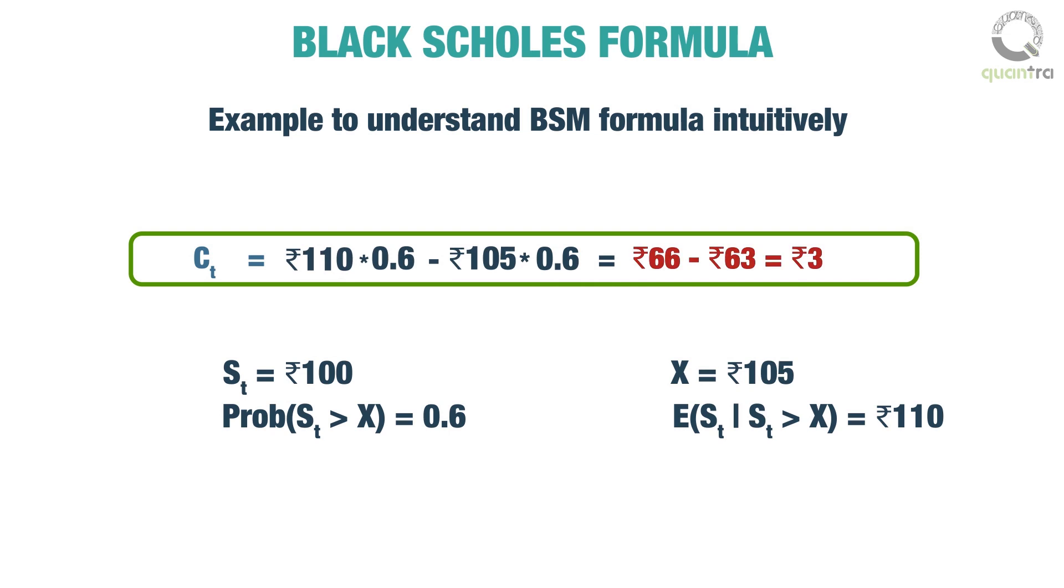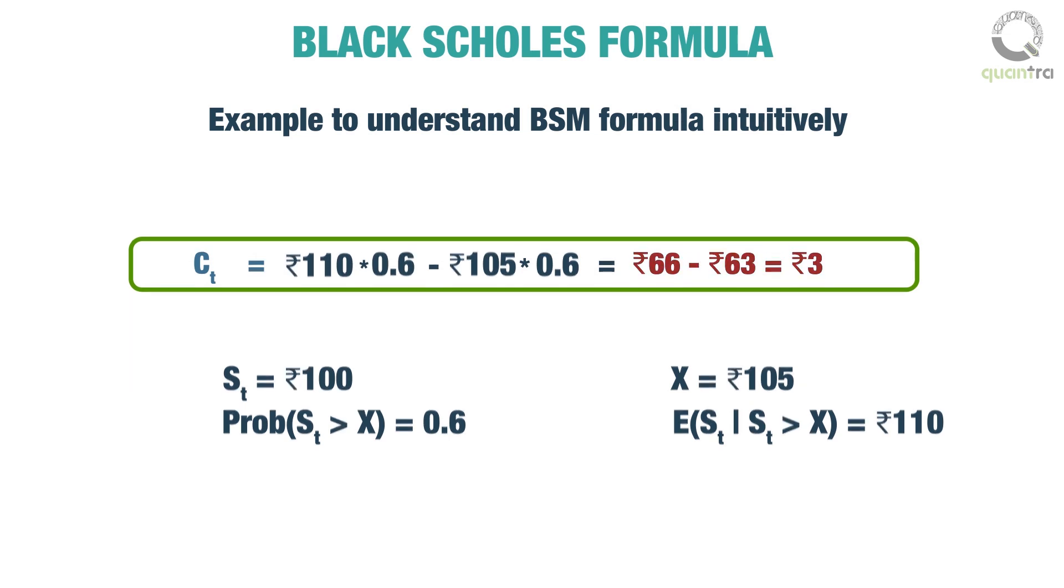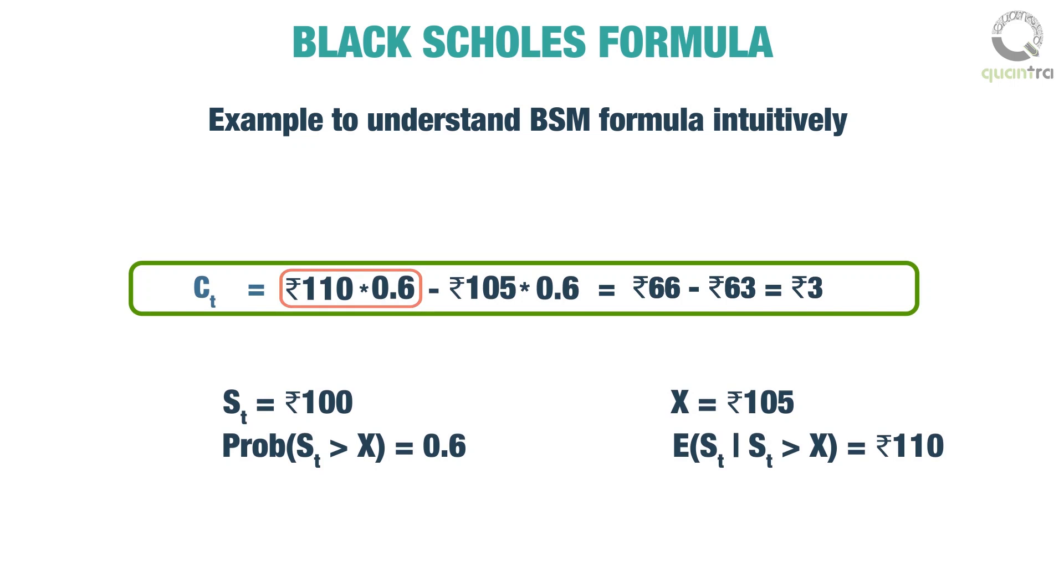Then by the intuitive formula, the option premium should be equal to 110 multiplied by 0.6 minus 105 multiplied by 0.6, that is 66 minus 63, which equals rupees 3. 110 into 0.6 is the component relating to selling the stock in the market, and 105 into 0.6 is the component for buying the stock by exercising the option.